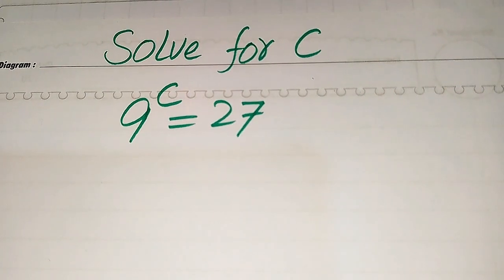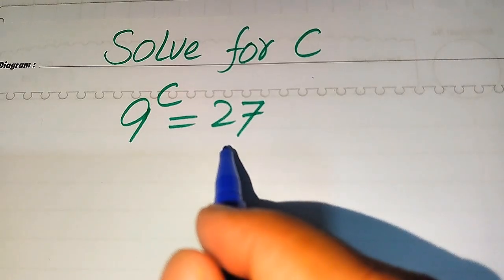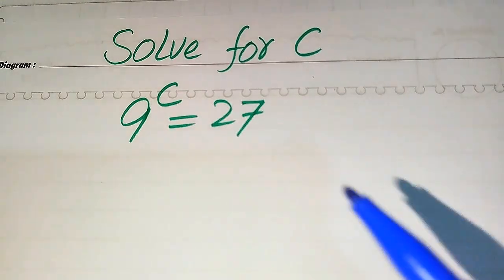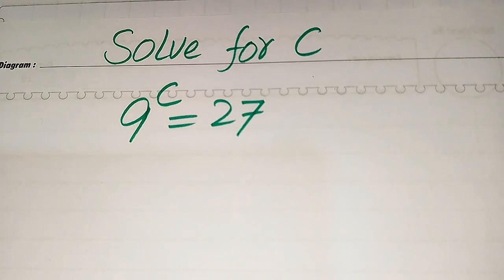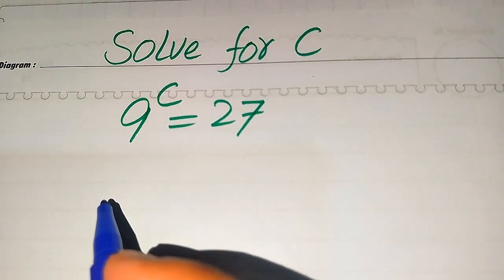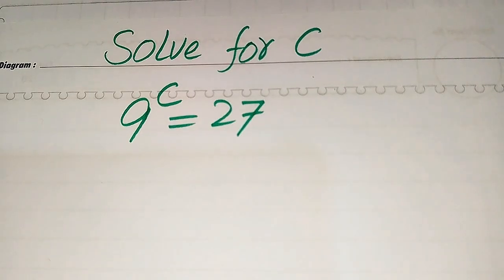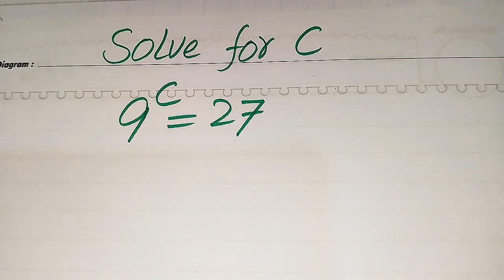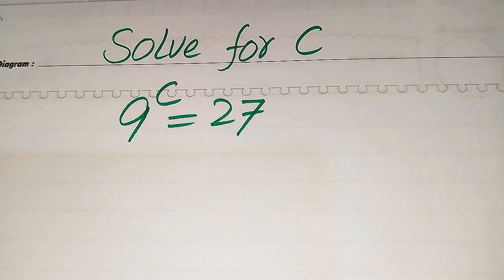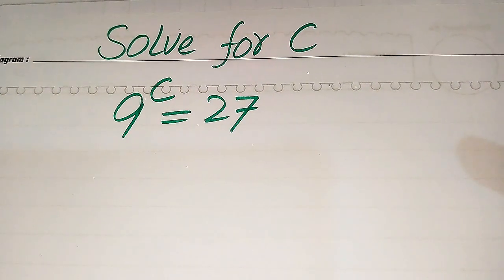Hello everyone. How to solve this problem for the values of C if we have 9 to the power of C equals 27? First we find all the roots of this equation, and at the last we verify which of the roots are solutions and which are extraneous roots. I will explain the difference between solution and extraneous root at the end, so please watch this video until the end.